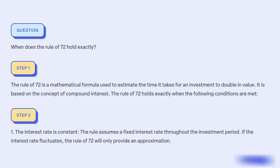Condition 1: The interest rate is constant. The rule assumes a fixed interest rate throughout the investment period. If the interest rate fluctuates, the rule of 72 will only provide an approximation.